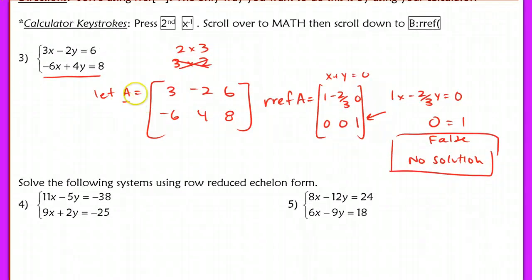All you do is say let A equal, now you include all the coefficients and the constant matrix together. You hit row reduced echelon form and it spits out an answer. Let's practice this again just so you get the hang of it.